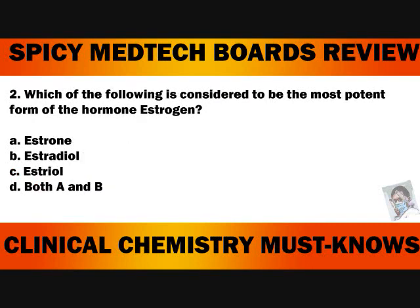Number 2. Which of the following is considered to be the most potent form of the hormone estrogen? A. Estrone. B. Estradiol. C. Estriol. D. Both A and B.